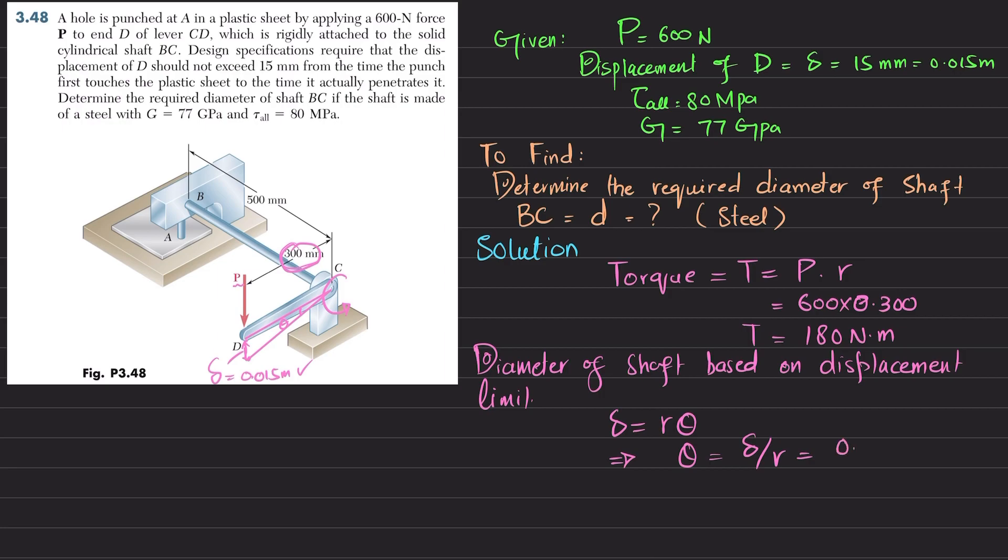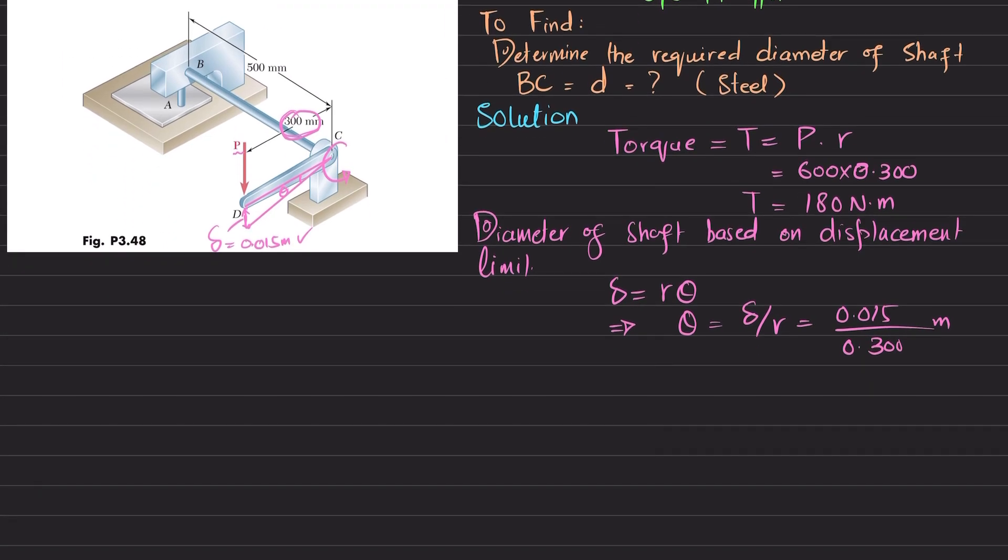The unit will be radians. You will get theta equals 0.05 radians.